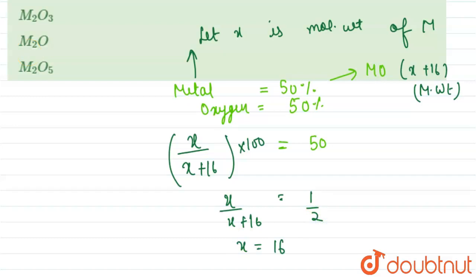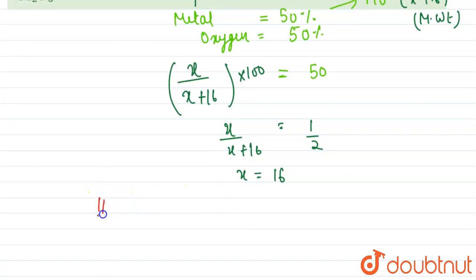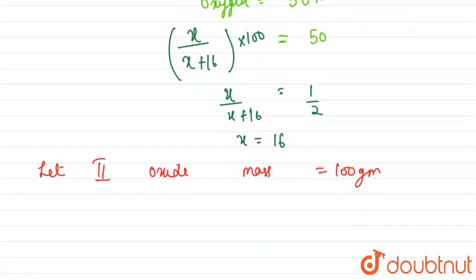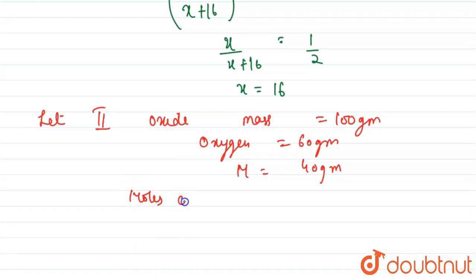So this is the molecular weight of the metal. For second oxide, we can calculate the formula. Let second oxide mass is 100 gram. In it, 40 percent is metal and 60 percent is oxygen, so oxygen will be 60 gram and metal M will be 40 gram. Moles of oxygen, that will be 60 upon 16, and moles of metal will be 40 upon 16.